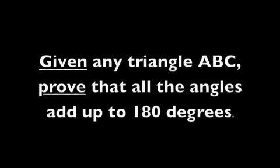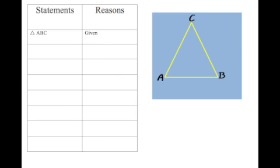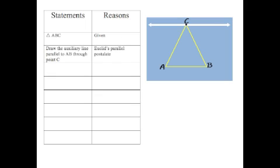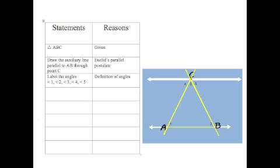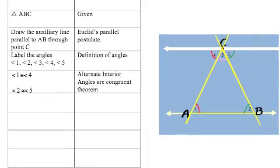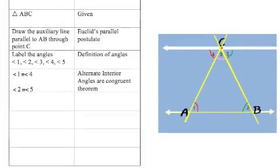Now for the formal proof. Given any triangle ABC, prove that all the angles are 180 degrees. Statement one: we have triangle ABC — reason: given. Next, draw the auxiliary line parallel to AB through C, which we can do by Euclid's parallel postulate. Then label the angles — reason: definition of angles, which is in between two rays at a vertex. Now we know those angles are congruent: angle 1 is congruent to angle 4, and angle 2 is congruent to angle 5, by the alternate interior angles congruence theorem.